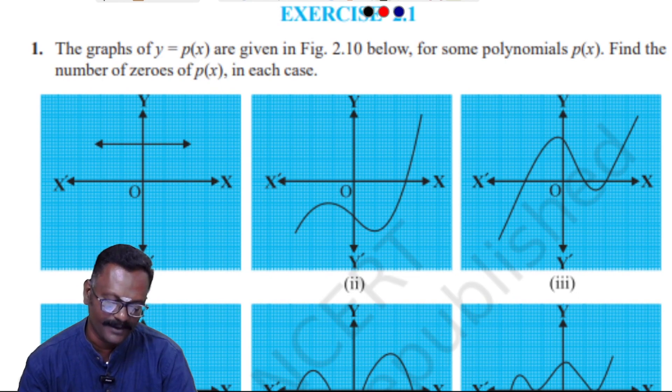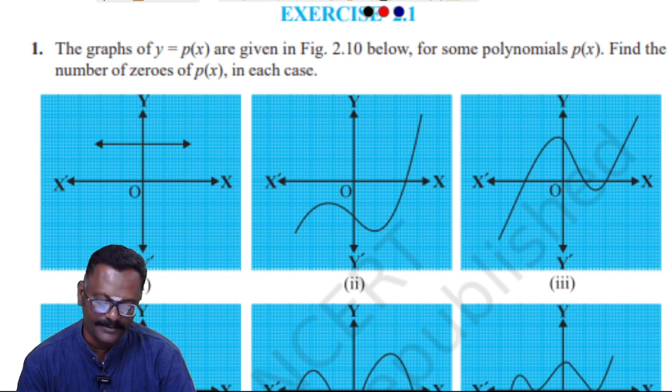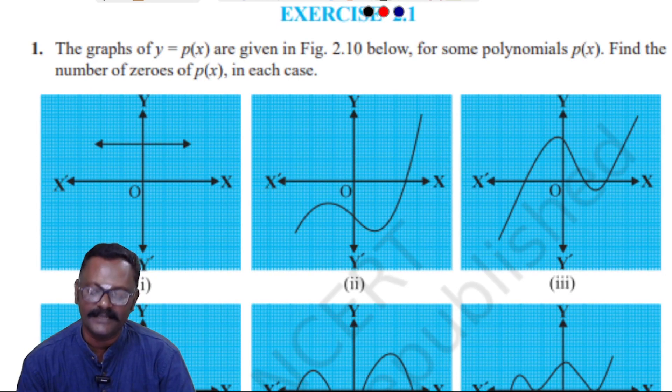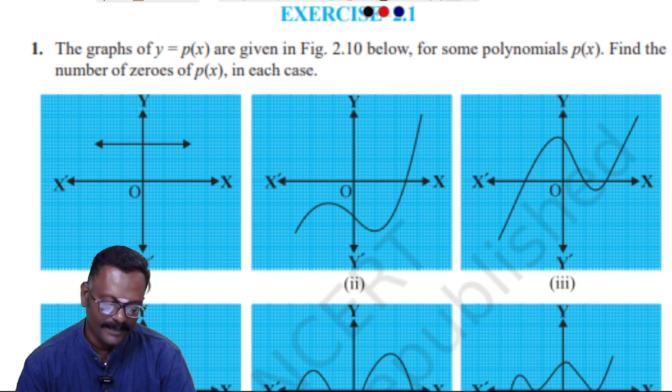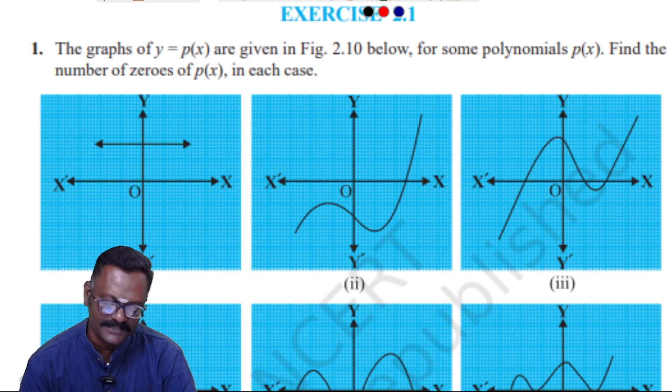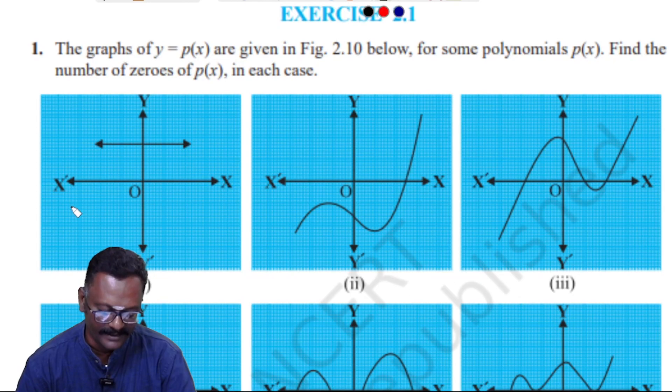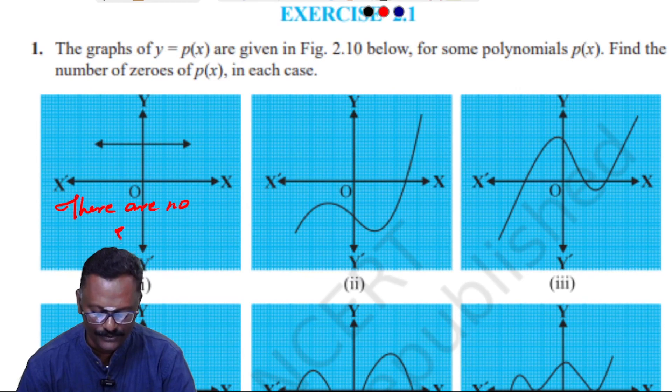First one. So number of zeros - already in my example concept, where the graph touches or intersects the x-axis, that is the number of zeros. In the first one, the graph doesn't intersect the x-axis, so the answer is there are no zeros.